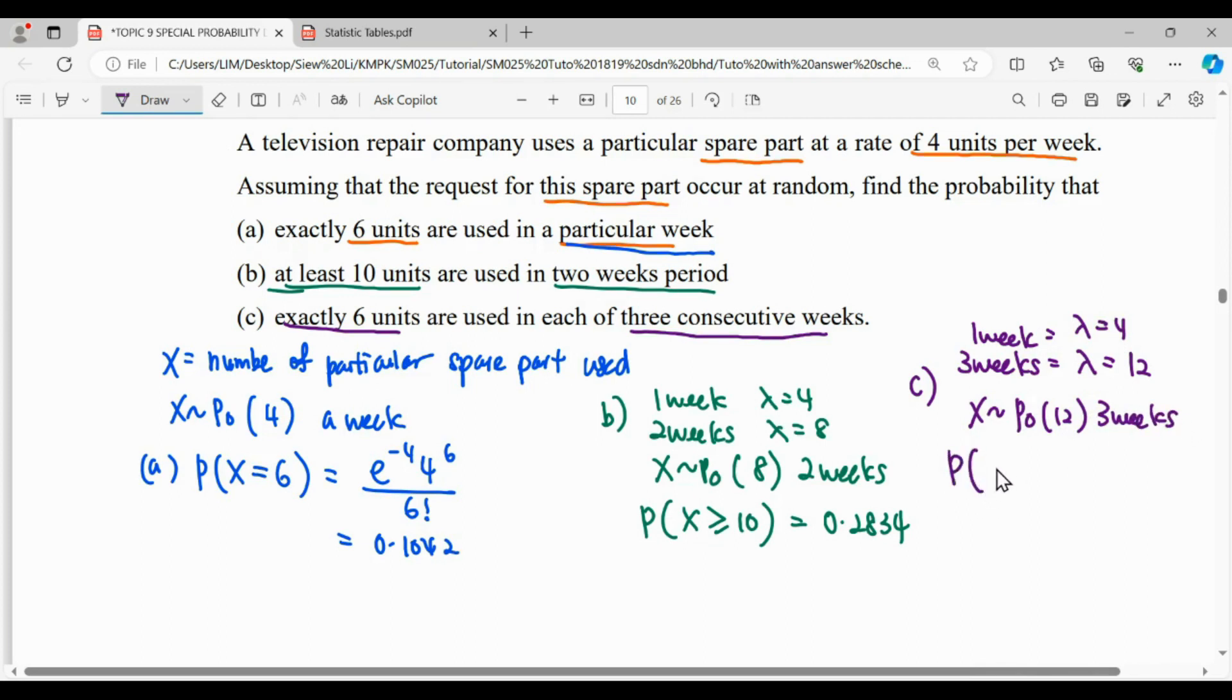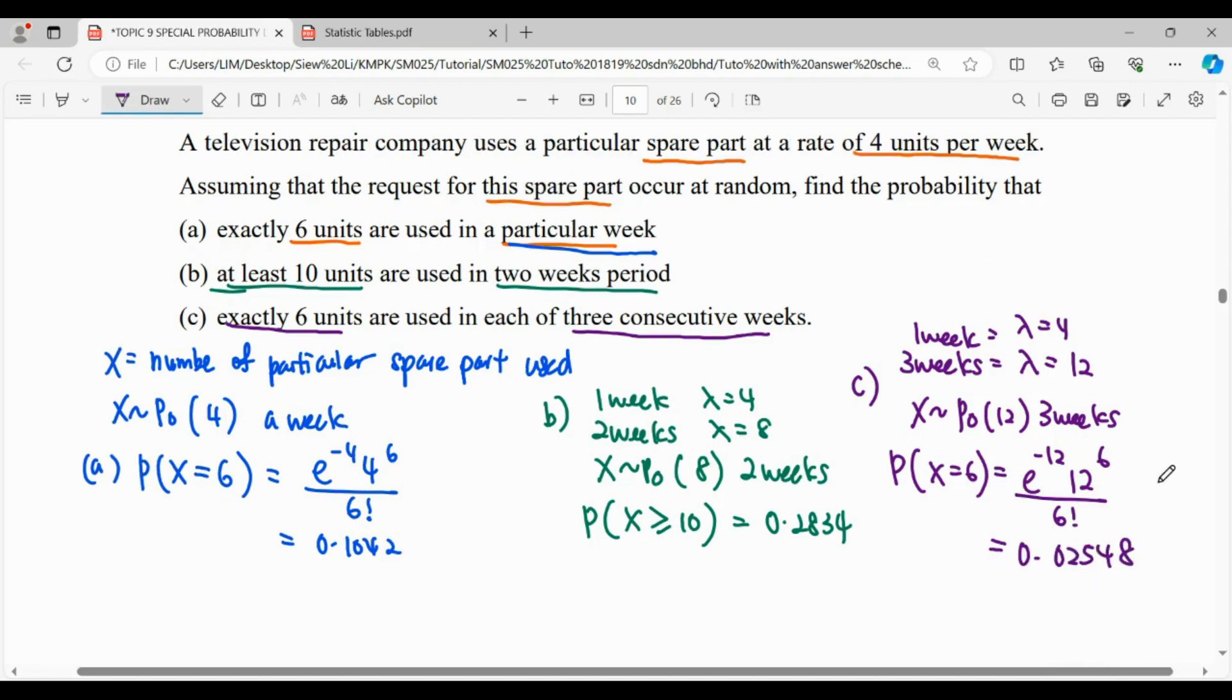Then we find the probability of exactly 6. So when we have equal to 6, we can use the formula where e^(-12) times 12^6 over 6 factorial. For this, we can evaluate using a calculator, or another method is using the table.